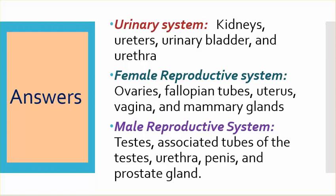The urinary system has kidneys, ureters, urinary bladder, and urethra. Female reproductive system: ovaries, fallopian tubes, uterus, vagina, and mammary glands. Male reproductive system has testes, associated tubes of the testes, urethra, penis, and prostate gland.